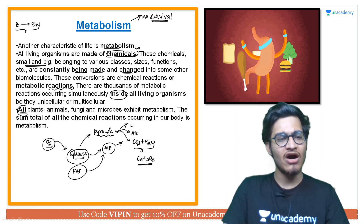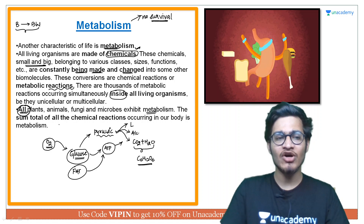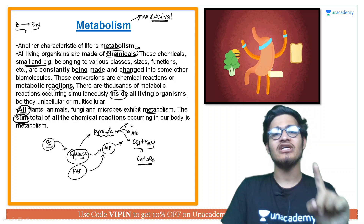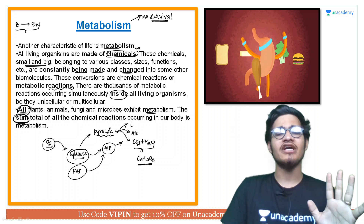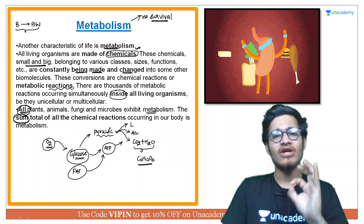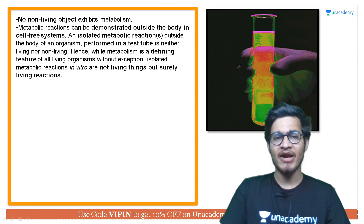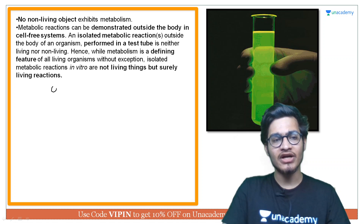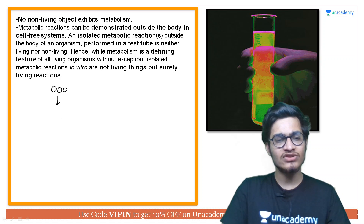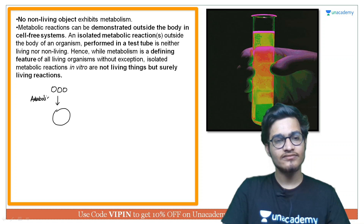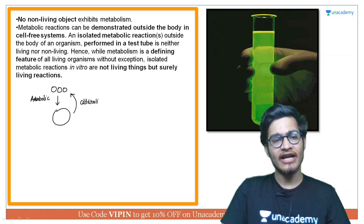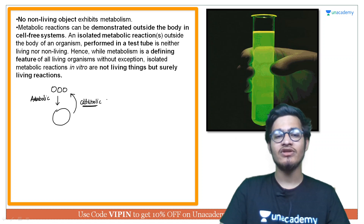All organisms, from bacteria to blue whales, without any exception, show metabolism. Metabolism is the sum total of all the chemical reactions in your body — all of them, without exception, are metabolic reactions. These reactions can be constructive or destructive. If small compounds aggregate to form a big compound, it is called an anabolic reaction. If a large compound breaks down into smaller ones, it is a catabolic reaction. The combined sum of anabolic and catabolic reactions is called metabolism.